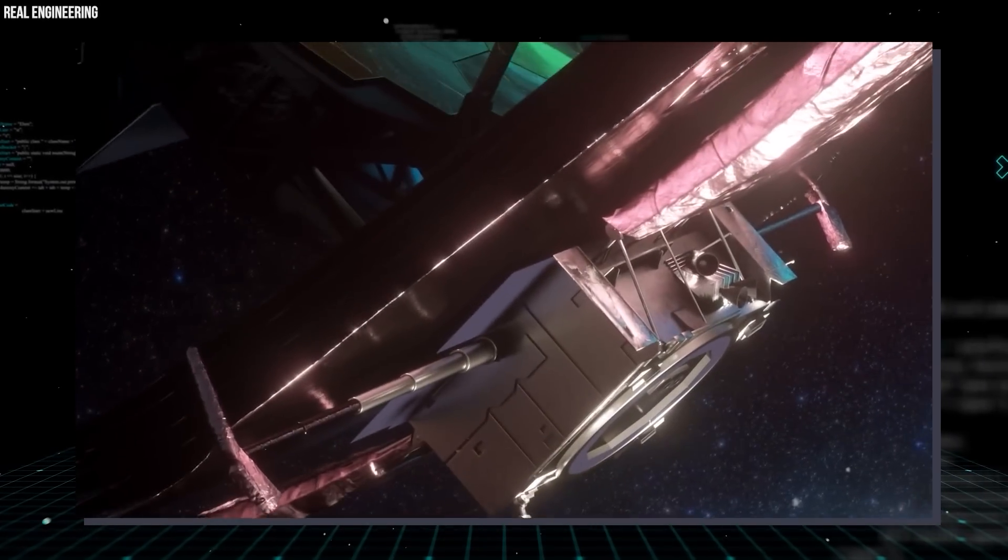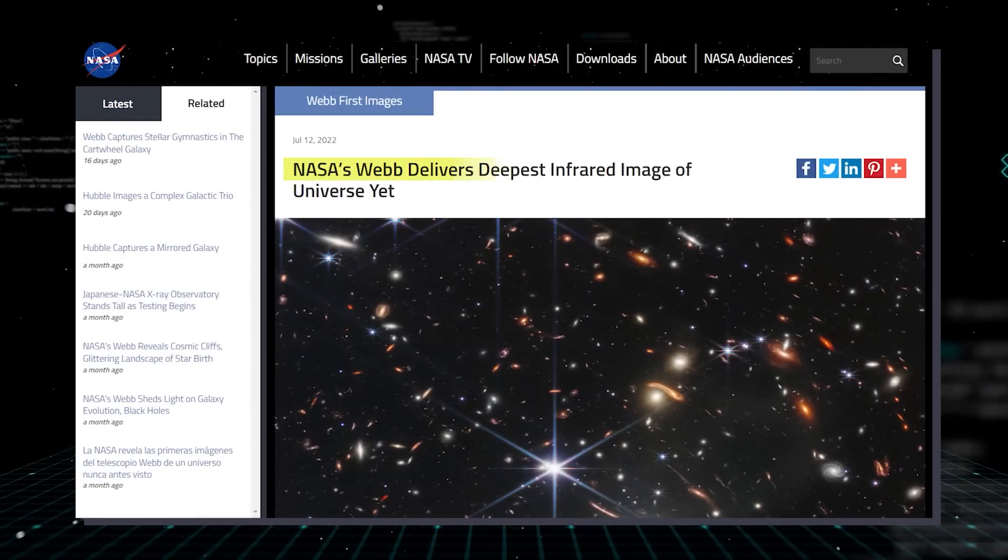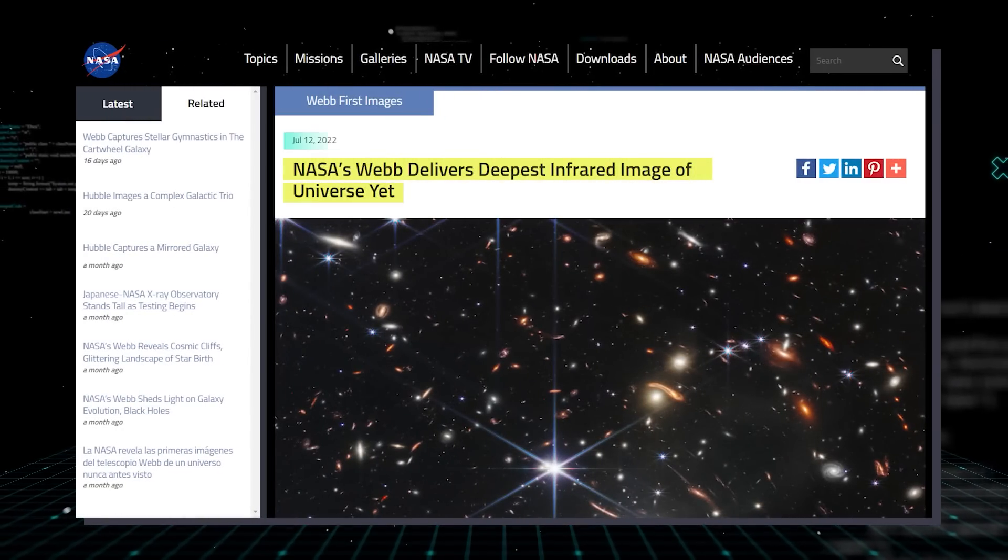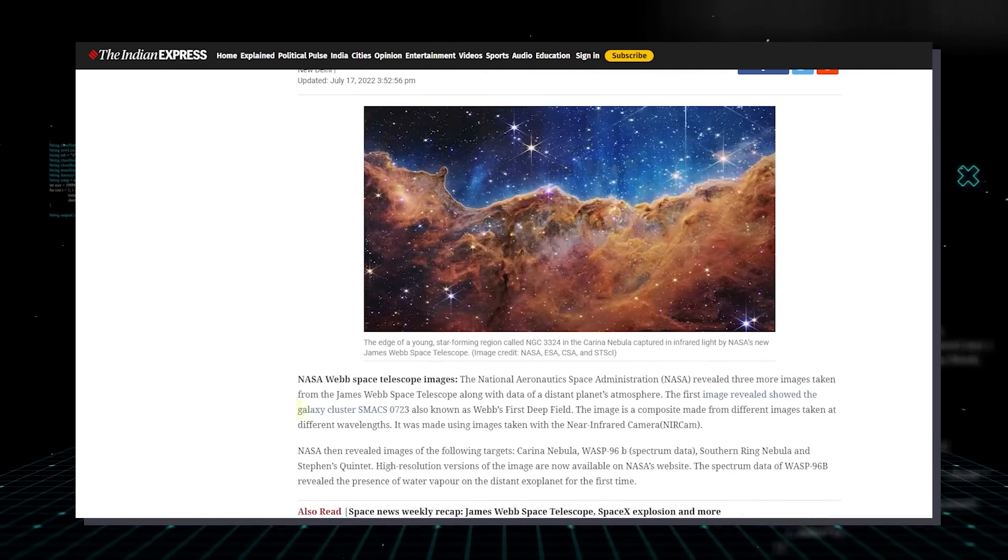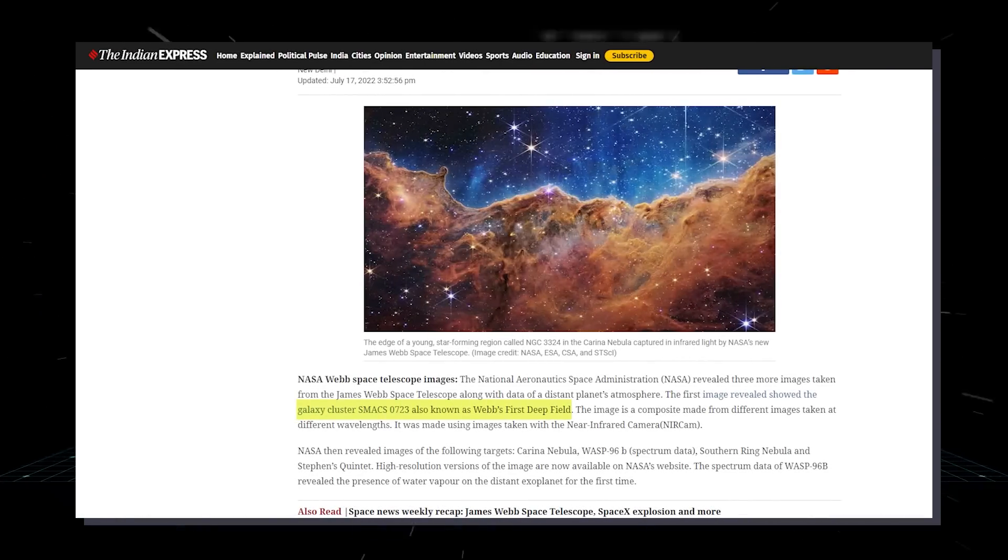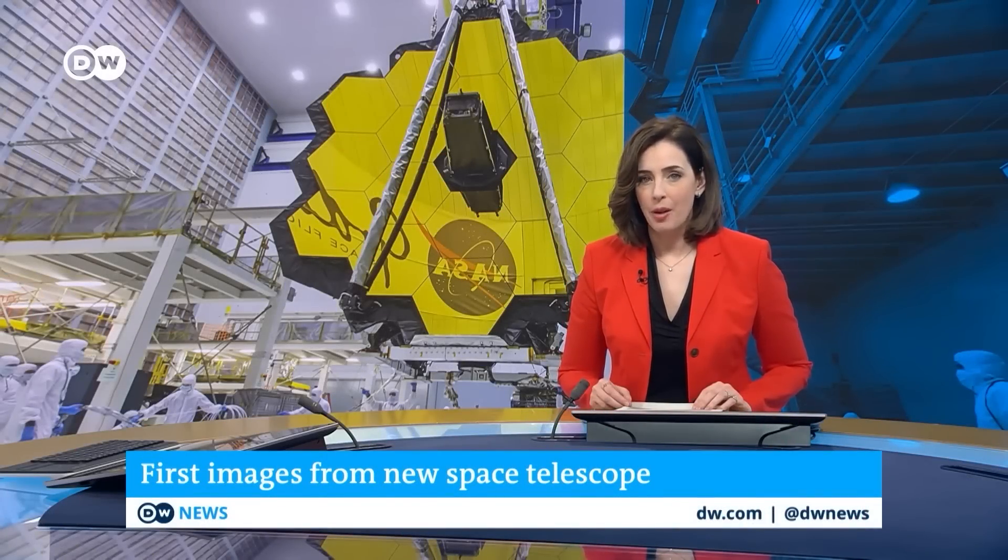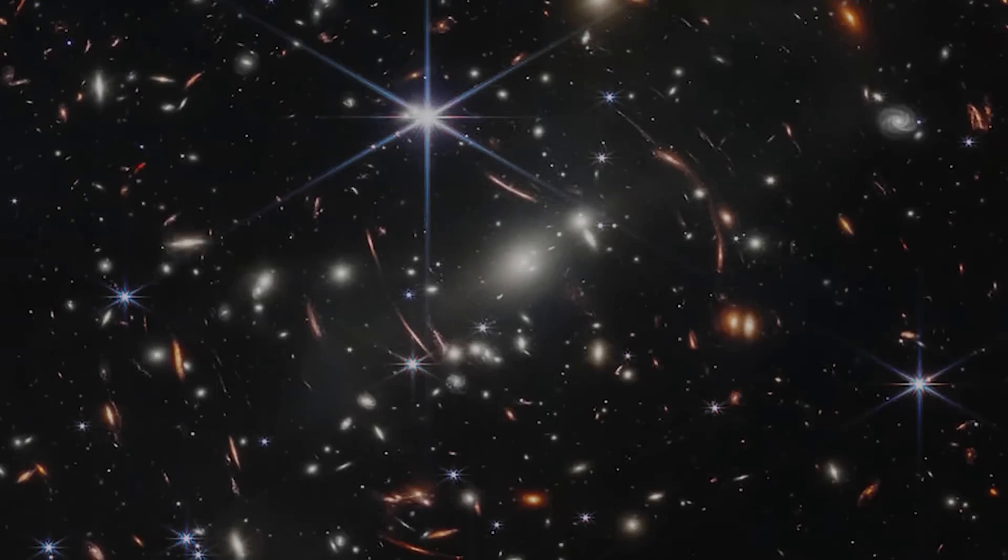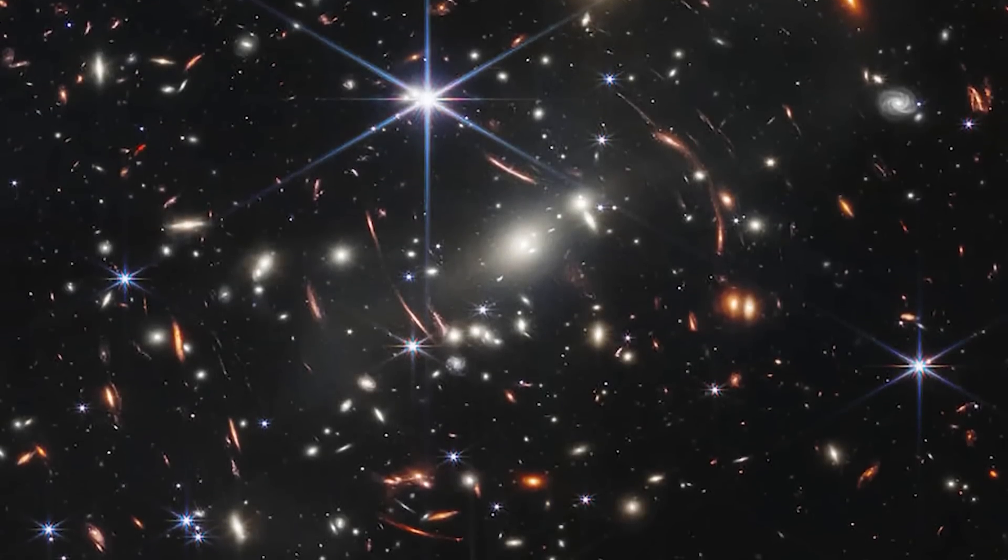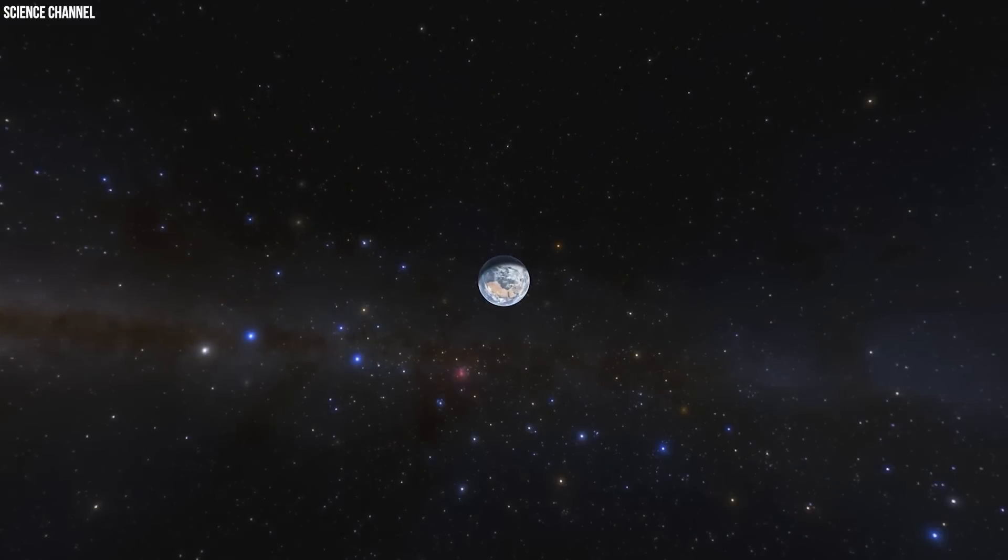Before any of the other images captured by the James Webb telescope took the internet by storm, we were given a glimpse into the deepest image of our universe on the 11th of July 2022. This is an image of the cluster of galaxies known as SMAX 0723. This extraordinarily high resolution and high definition picture provides the deepest view of the stunning universe we are a small part of.